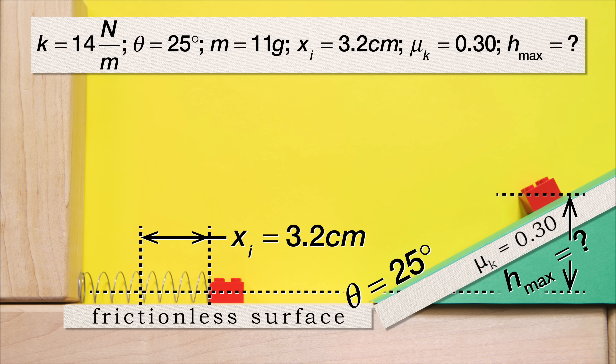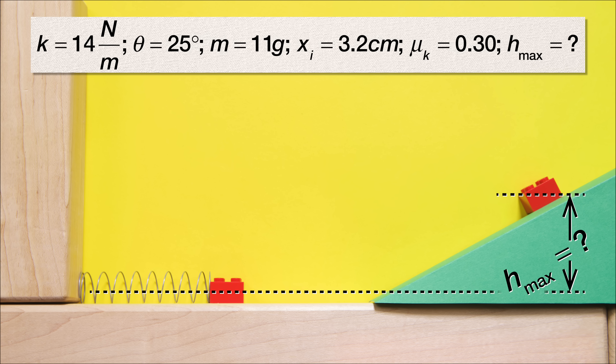The coefficient of kinetic friction between the incline and the block is 0.30. And we are solving for maximum height, so height maximum equals question mark.